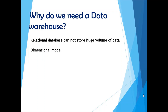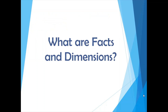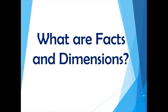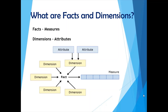The third question is: what are facts and dimensions? Facts are anything which can be measured — all the fields in a fact table are known as measures. A fact contains anything that can be quantitatively measured, such as the number of products sold in a day or the number of orders executed in a day. These are mostly numerical quantities stored in a fact table.